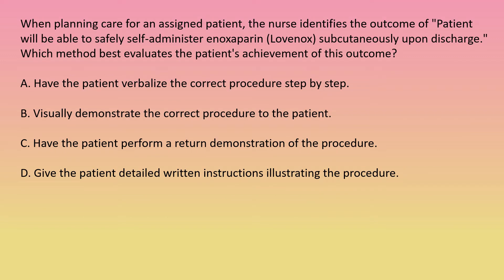When planning care for an assigned patient, the nurse identifies the outcome: patient will be able to safely self-administer Enoxaparin subcutaneously upon discharge. Which method best evaluates the patient's achievement of this outcome? A: have the patient verbalize the correct procedure step by step. B: visually demonstrate the correct procedure to the patient. C: have the patient perform a return demonstration of the procedure. D: give the patient detailed written instructions illustrating the procedure.